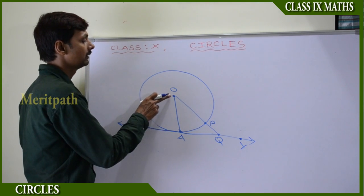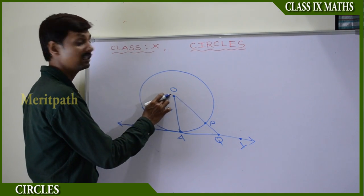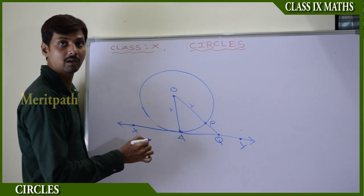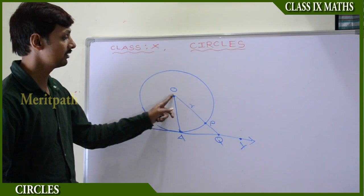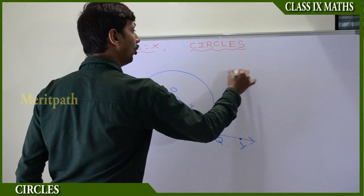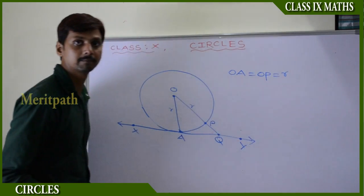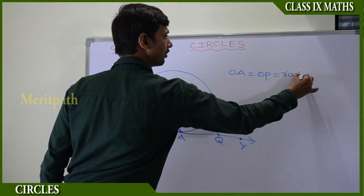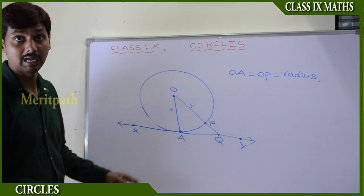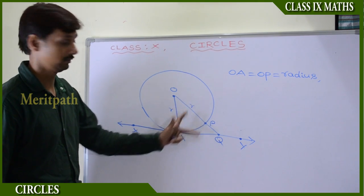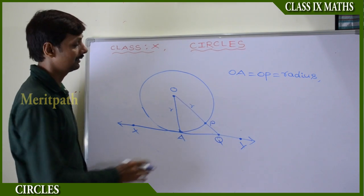We can observe that OE and OP are both radii of the circle, because the center to any point on the circle is the radius and all radii of the circle are equal. So OE is equal to OP.